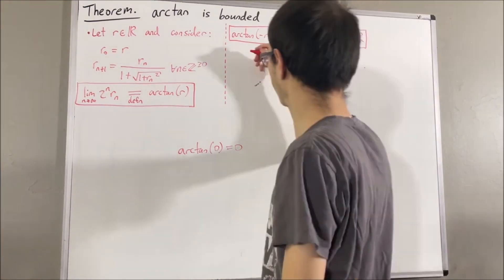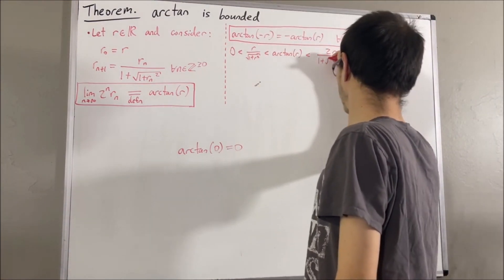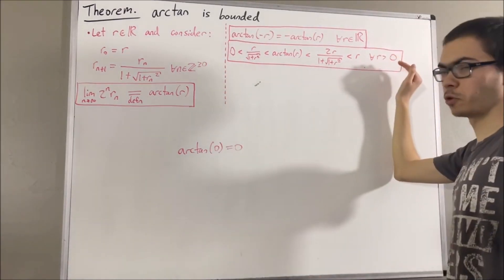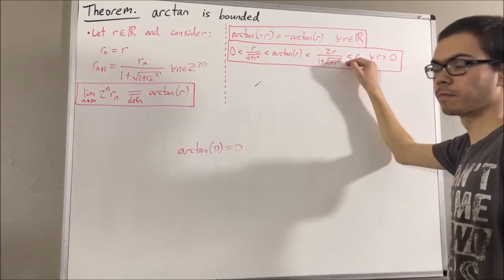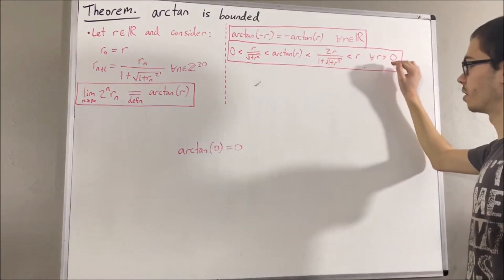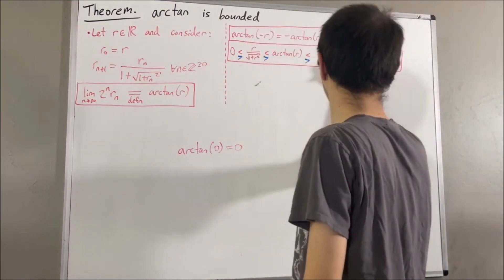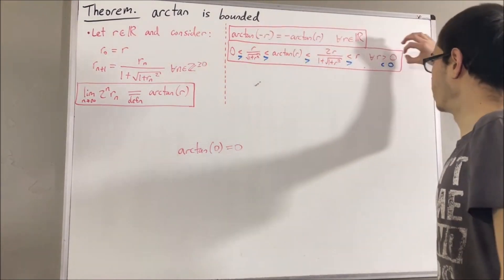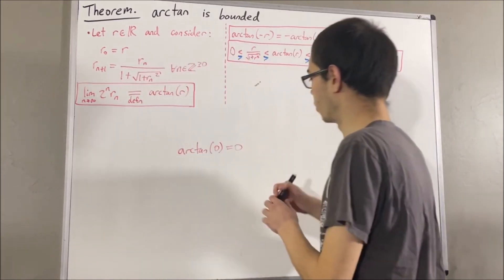We also proved that for all positive real numbers r, a certain inequality holds. In fact, if r is less than 0, then the inequalities get reversed. And with these two facts, we were able to show the following property.